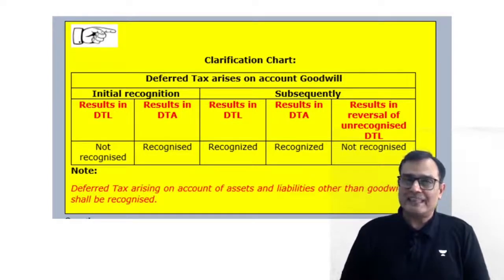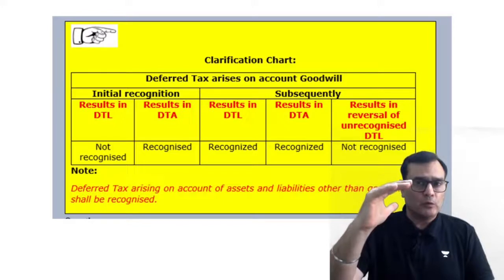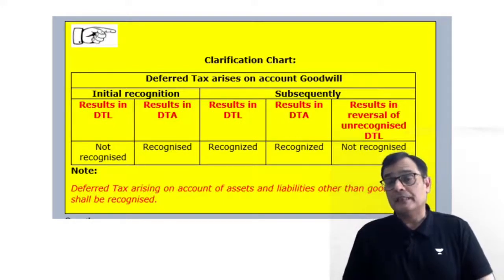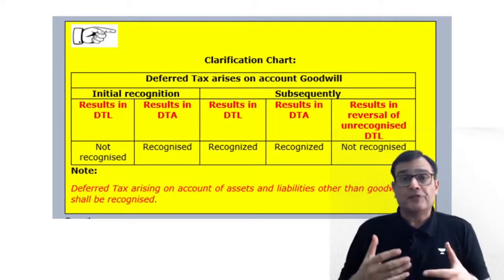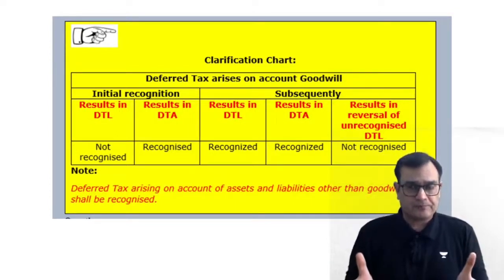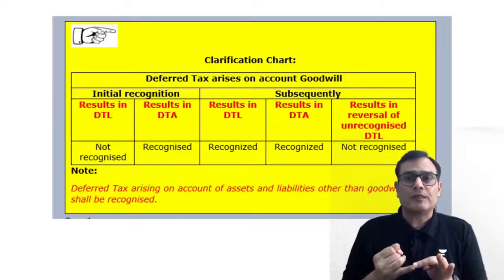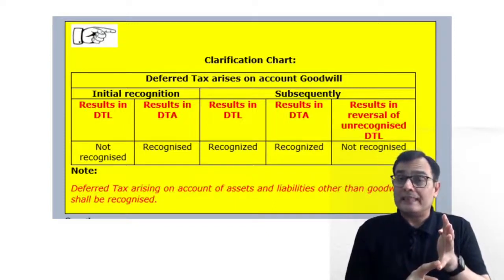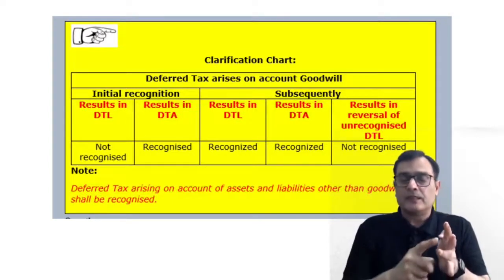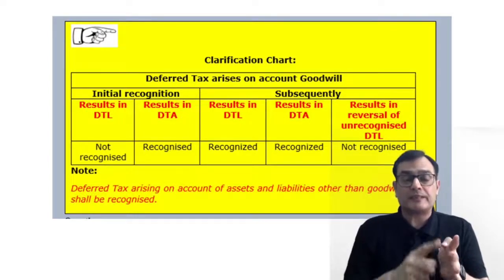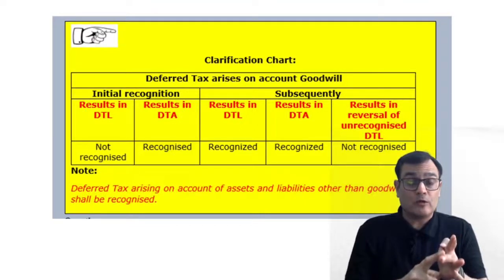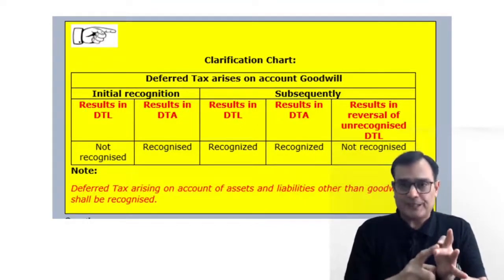So the standard makes a prohibition in terms of recognizing a DTL on account of goodwill. As far as a DTA is concerned, it does not prohibit it, for the simple reason that when you recognize a DTA, the debit side becomes more, so it would lead to a bargain purchase gain rather than an impact on goodwill. An increase in the bargain purchase gain is not an asset or liability, so it does not lead to any kind of circular effect. So: net assets other than goodwill — do we consider deferred tax? Yes. Goodwill with a DTL — do we recognize it? No, because it leads to a circular effect. Goodwill with a DTA — do we recognize it? Yes.